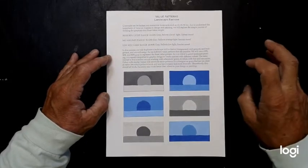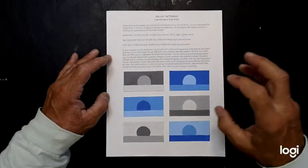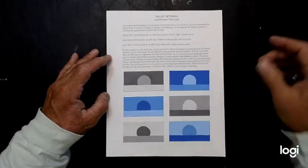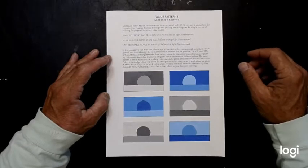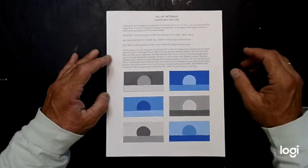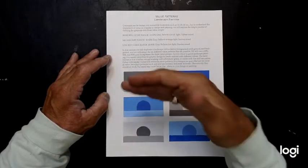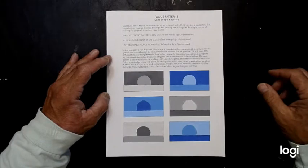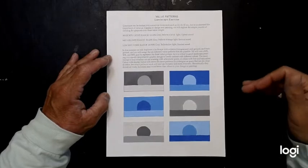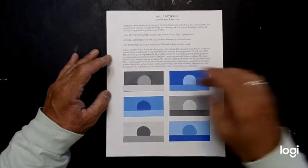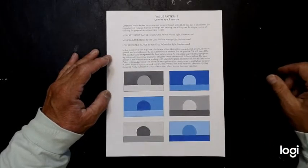Value patterns are a nice exercise in understanding how to work with a dark area, a light area, a mid area, and a low-key dark area. So you have a light, middle, and dark range of values. In this particular project, I'm assigning 20%, 50%, and 80% of either black or of a color that we're working with.